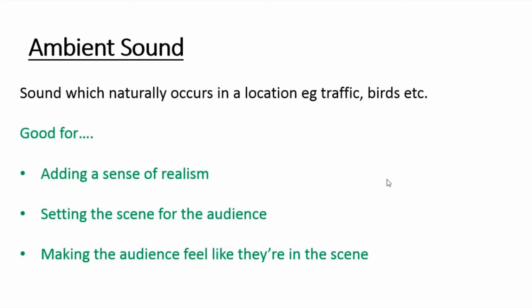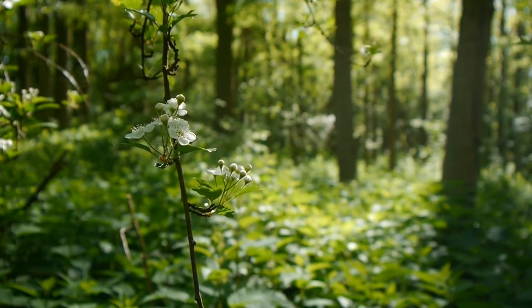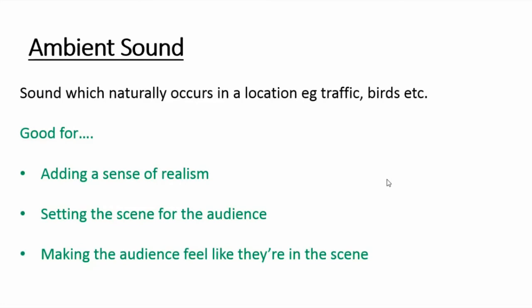Ambient sound is the sound which naturally occurs in a particular location. For example, stood in the middle of London at Piccadilly Circus, the ambient sound would be traffic, people shouting, taxis, footsteps, and chatting. In a forest it would be birds tweeting, crickets, and trees rustling. It doesn't mean the sound wasn't added by a foley artist — it just creates the feeling of natural sound in the location. It adds realism, sets the scene, and makes us feel like we are there.